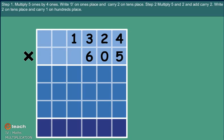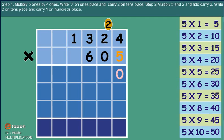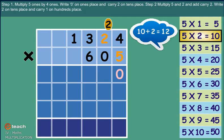Step 1: Multiply five ones by four ones. Write 0 on ones place and carry 2 on tens place. Step 2: Multiply five and two and add carry 2. Write 2 on tens place and carry 1 on hundreds place.